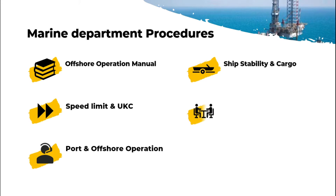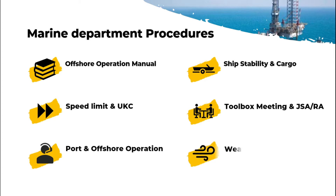Number five is toolbox meeting and job safety analysis — risk assessment. They will ask what is the toolbox meeting and what is the job safety analysis. Number six is weather limits — they may ask what is the maximum wind speed when entering the harbor or the maximum wind speed for operations at sea.